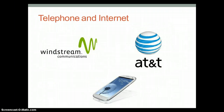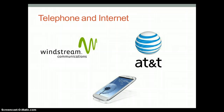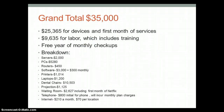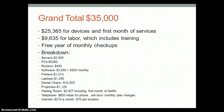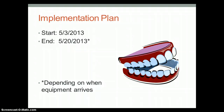We recommend going mobile with Samsung Galaxy S3 cell phones for a more active office, where workers will have the freedom to travel around while remaining connected. Windstream will provide your internet connection. The grand total comes to $35,000 — $25,365 for the devices and first month of services, and the other $9,635 is for labor and your first year of maintenance. Please pause to view a more detailed pricing breakdown. We would love to start putting in orders as soon as this Friday, and if everything comes in on time, we will be finished no later than Monday, May 20th. Thank you again for your time and consideration.